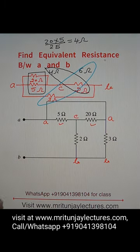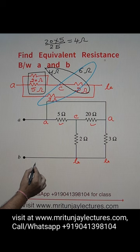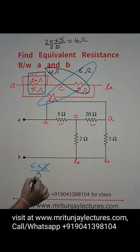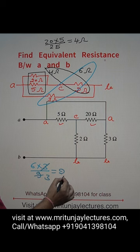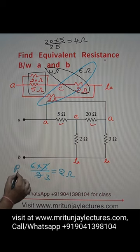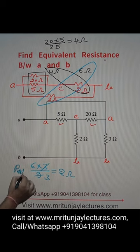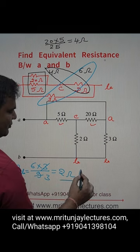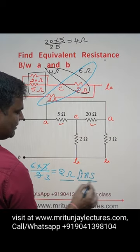6 and 3 both are parallel. So you can say that 6 into 3 divided by 6 plus 3, that is 9, so this is 2 ohm. So R_ab, R_ab, R_ab is how much? 2 ohm. The final answer is 2 ohm, is the right answer. Clear?